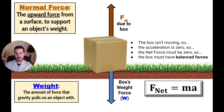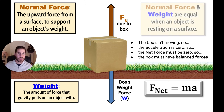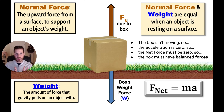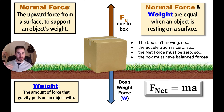Because these two forces are balancing out — completely equal and canceling each other out — the result is no net force on the box, and as a result the box does not accelerate. An important note: normal force and weight are equal any time the object is resting on a surface. There are exceptions, but the simple examples we'll start with this year are situations where weight and normal force are equal.